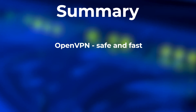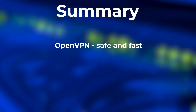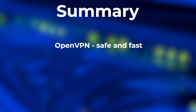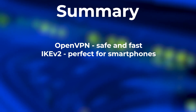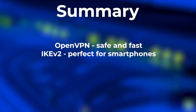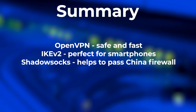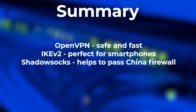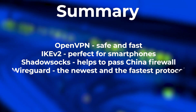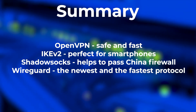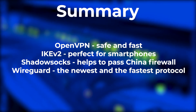So let's summarize what we have learned today. OpenVPN is a protocol with unbreakable encryption, so it's optimally safe and optimally fast. Internet Key Exchange version 2 works well with 3G and 4G LTE, so it's perfect for smartphones. Shadowsocks will be useful to get through firewalls in China. And WireGuard is the newest and the fastest protocol of them all.